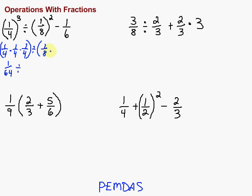I can just clean this up a little bit. Take one-eighth times one-eighth. Eight times eight is sixty-four. So I have one sixty-fourth divided by one sixty-fourth minus one-sixth.